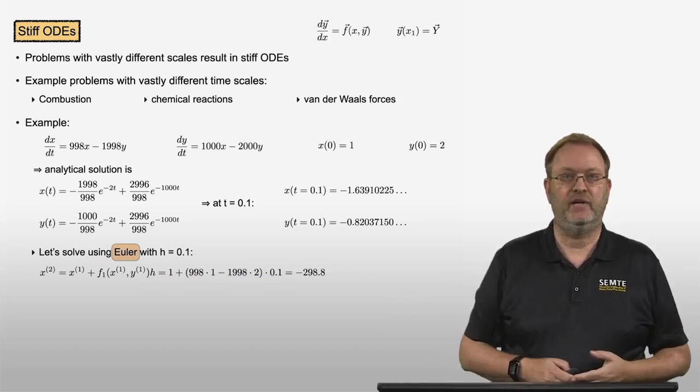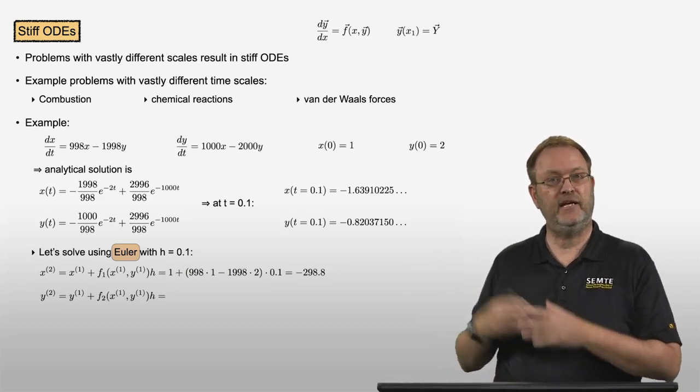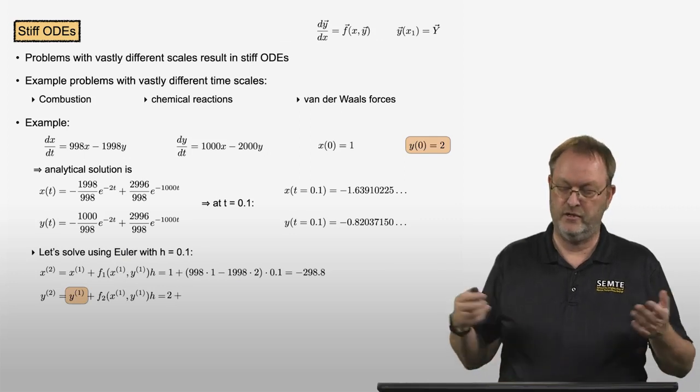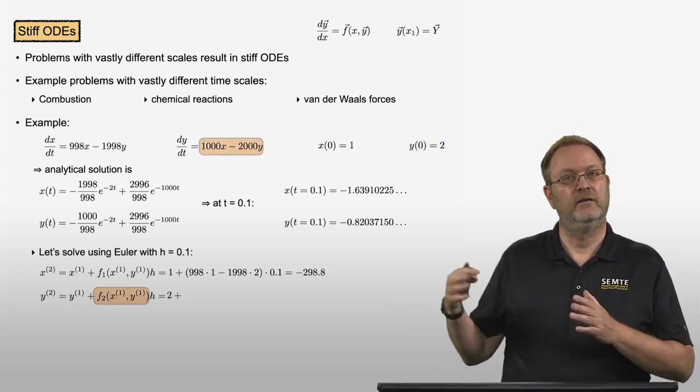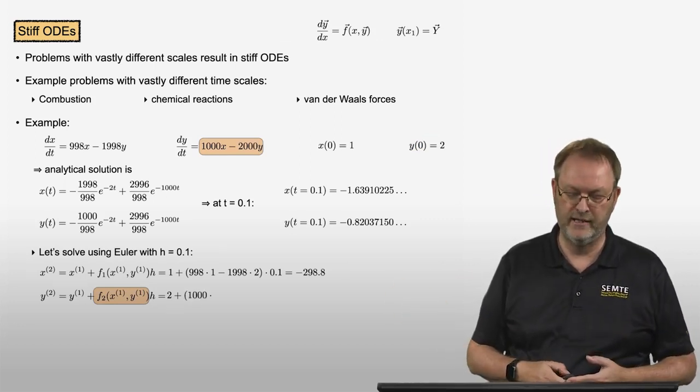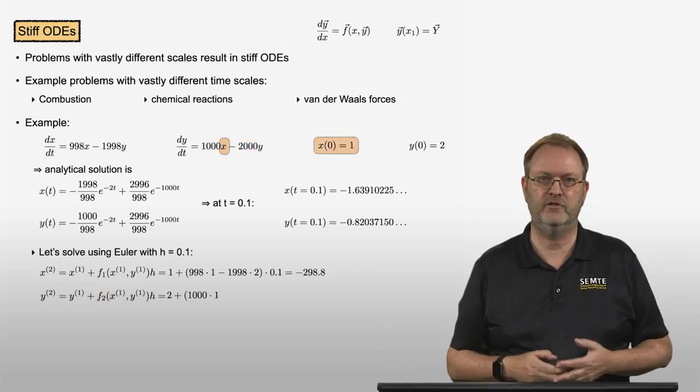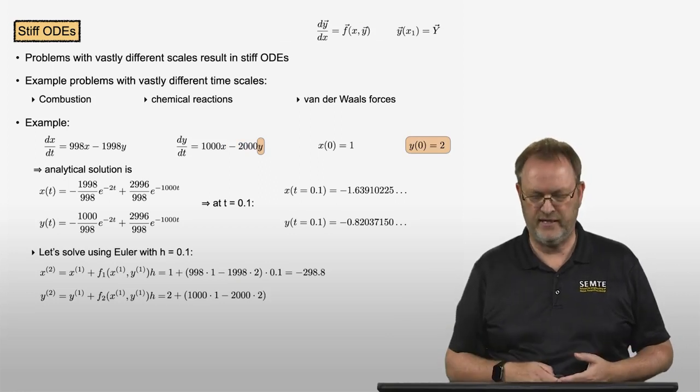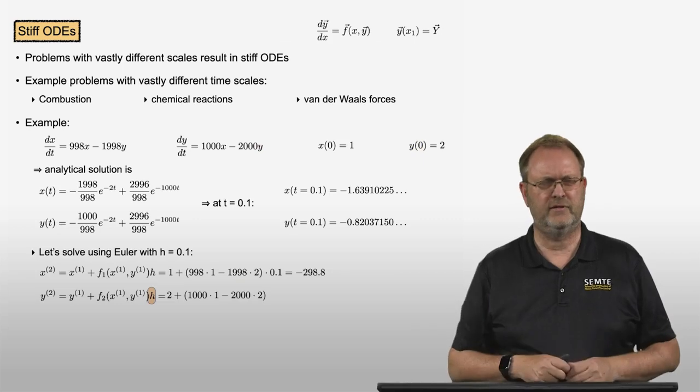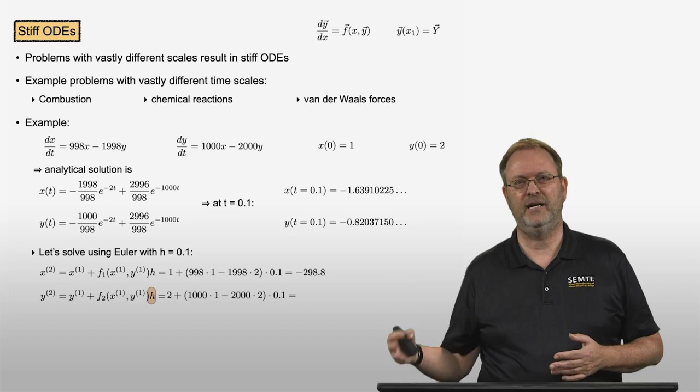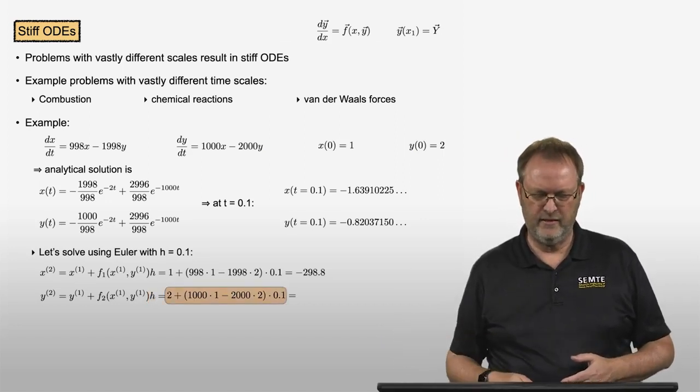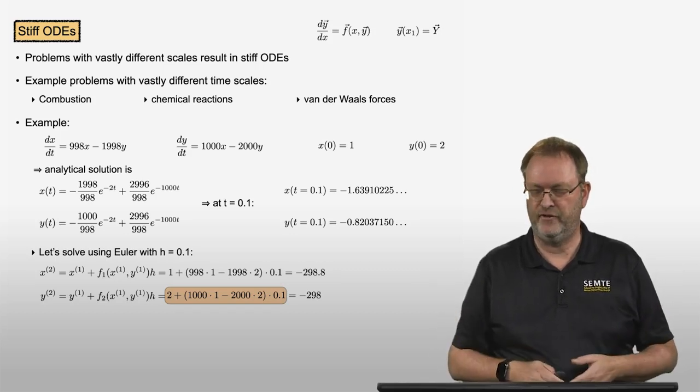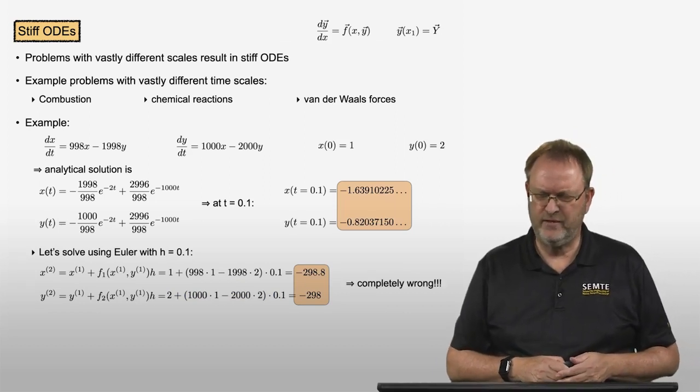And we use forward Euler for the second ODE as well. So y2 is equal to y1 plus the second ODE right-hand side f2 evaluated at my initial constraint values x1, y1 times the step size of h. So that gives us 2, that's the initial value for y, plus the right-hand side of the second ODE is 1000x minus 2000y. So 1000 times x1, x1 is 1, minus 2000 times y1, and y1 was equal to 2, so minus 2000 times 2. And if we plug those values in, times h, never forget that, times 0.1. So we've got 1000 minus 4000 times 0.1 plus 2, that's negative 298. That's the result of the forward Euler method, the RK1 method. So let's compare that to the analytical solution. Well, we'll see that we are completely wrong. We're not even in the right ballpark. That's very disconcerting.